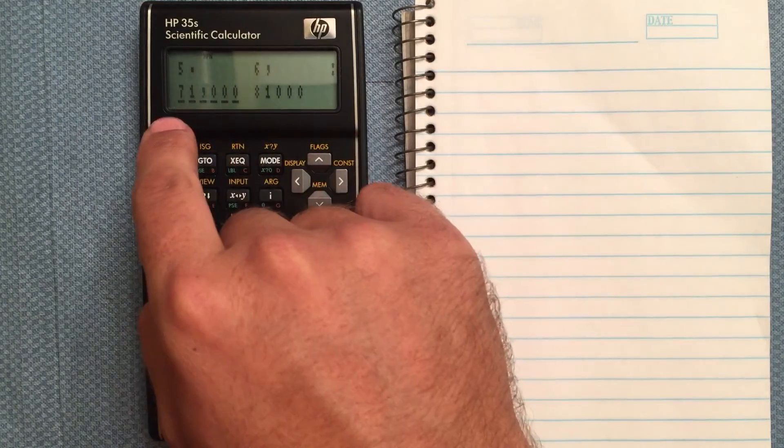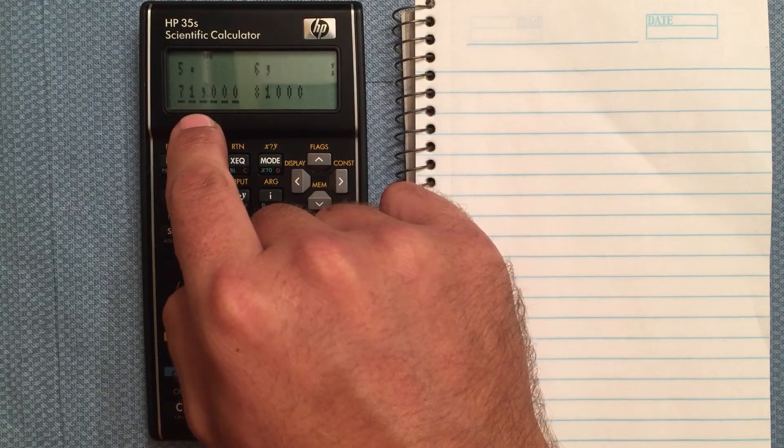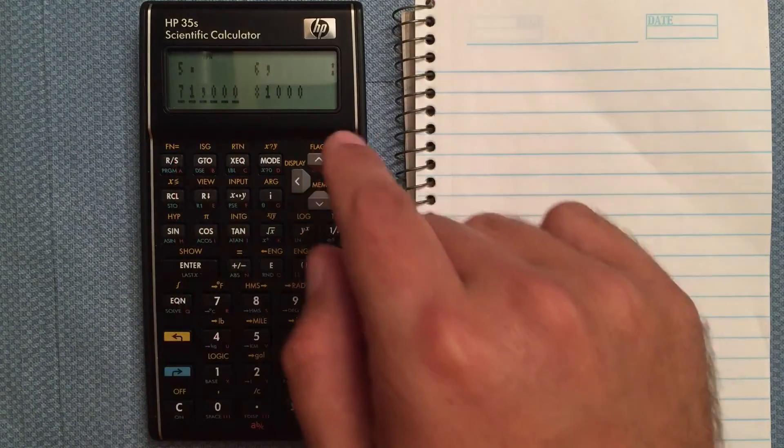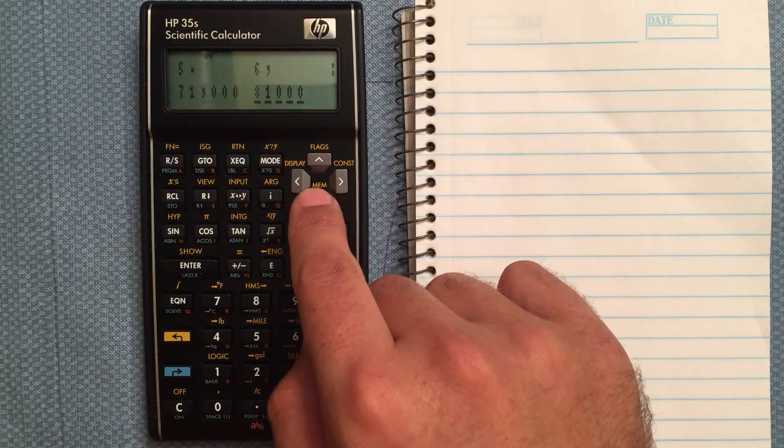Here, you choose if you want to see a comma for the thousandth separator. So for a million, a thousand, et cetera, or if you just want it to be straight numbers.